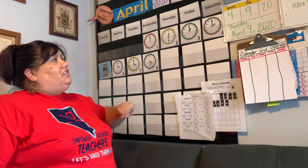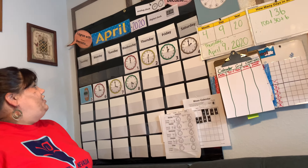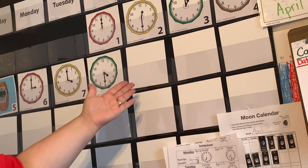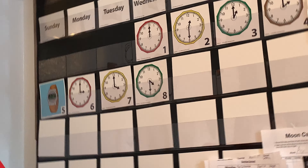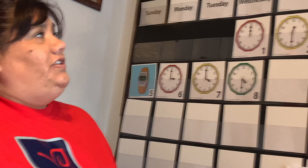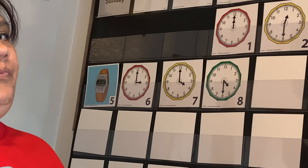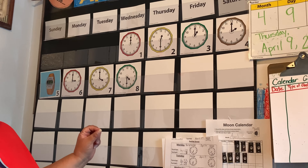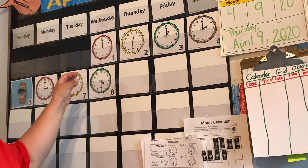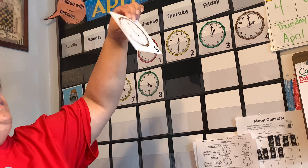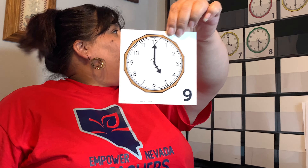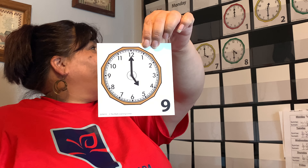So looking at our calendar grid so far, what do you think our clock is going to be? And what time will it show? Are you ready? Look at here — oh, it's an analog.